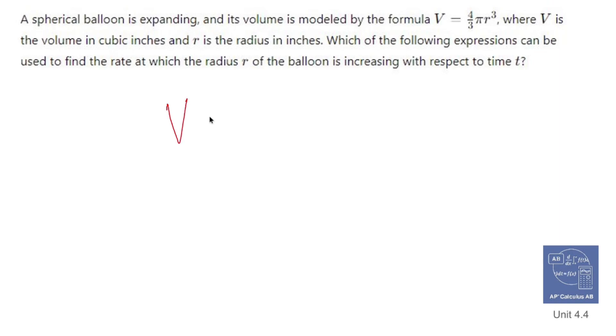So let's write out our formula. V equals four thirds pi r cubed. What I want to do is differentiate both sides with respect to t. So we're going to take d dt of both sides.